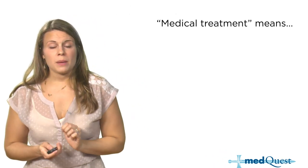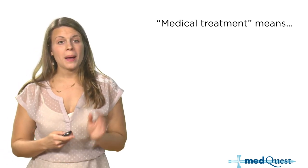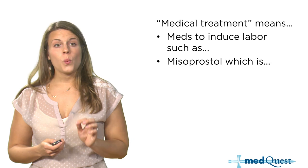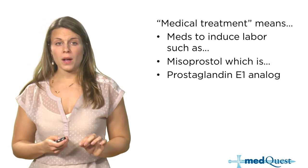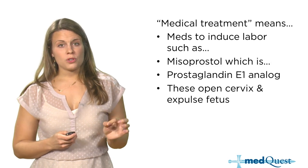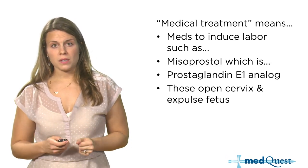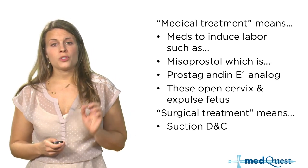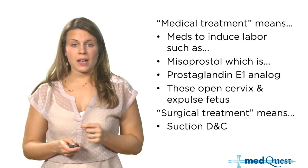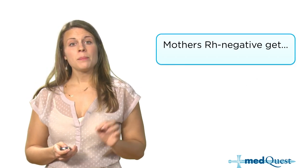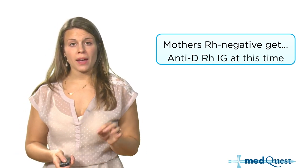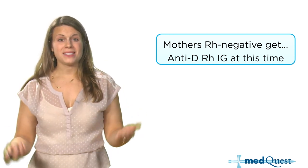Treatment of abortion can be medical or surgical. Medical treatment uses medications to induce labor, including misoprostol, a prostaglandin E1 analog that opens the cervix and exposes the pregnancy contents inside. Surgical treatment refers to suction dilation and curettage (suction D&C), where products are removed from inside and the patient can go home the same day. Any mother who is Rh negative will receive anti-D RhIG (RhoGAM) to prevent formation of antibodies against subsequent pregnancies.